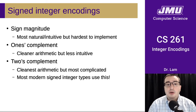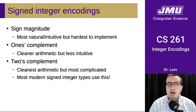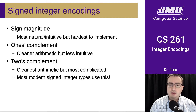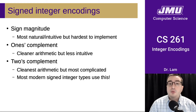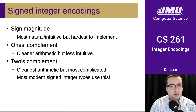We'll first talk about sign-magnitude, which is the most natural or intuitive and the easiest to understand. But it's the hardest to actually implement, and so it's rare to find a computer that actually uses sign-magnitude. There's also one's complement, which is an intermediate format — you get slightly cleaner arithmetic, but it's less intuitive.